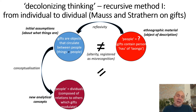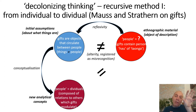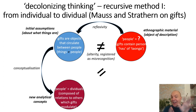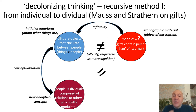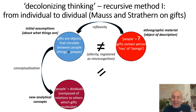Strathern needs to precipitate a conceptual journey from the initial presupposition of people as individual, sovereign, autonomous beings separate from each other and distinguished from inanimate gifts, to a position informed by the Melanesian ethnography where she has to reinvent her analytical language and talk of people as relations — not people that enter into relations with each other, but people who are themselves relations. And those relations are modulated through the relational technology that is the gift.